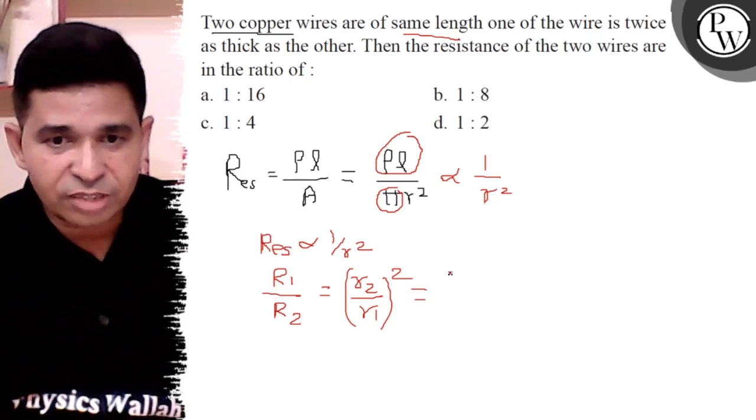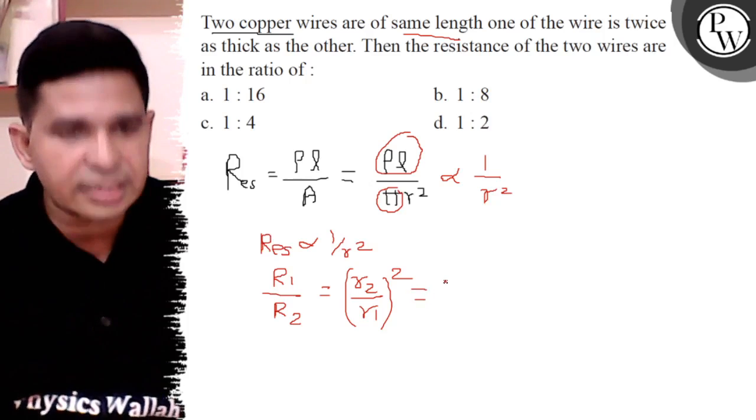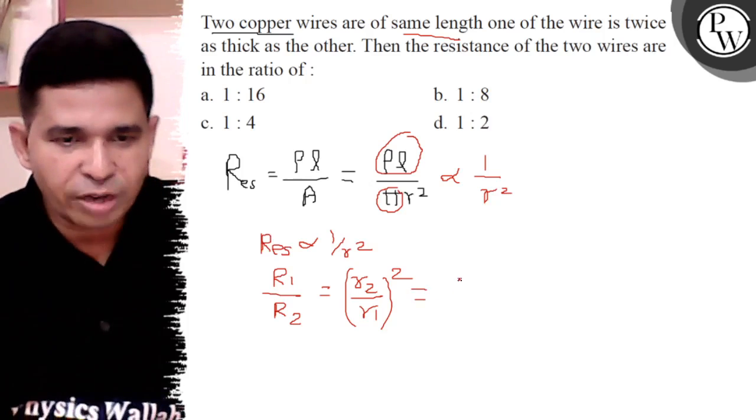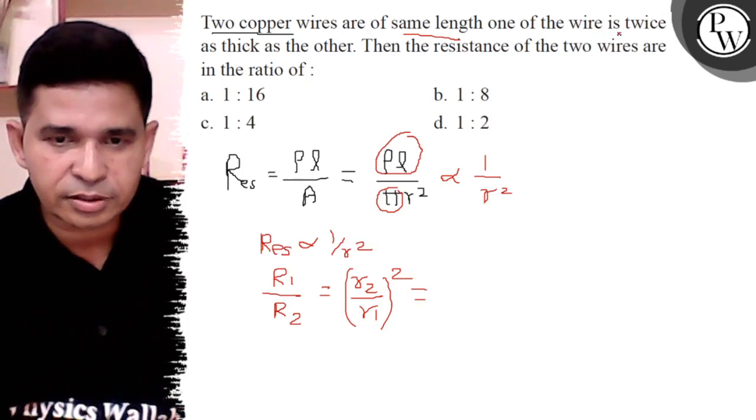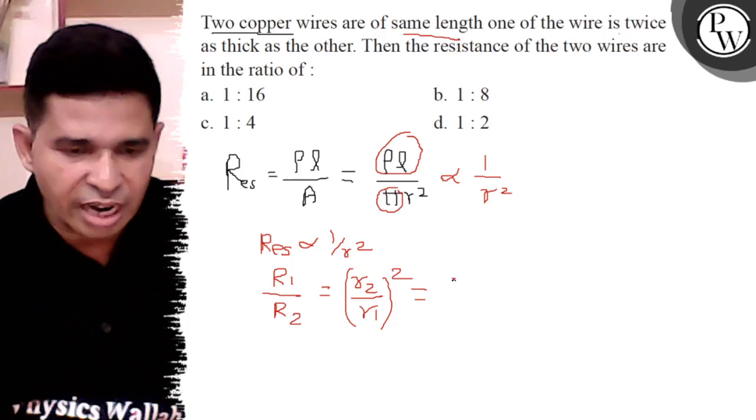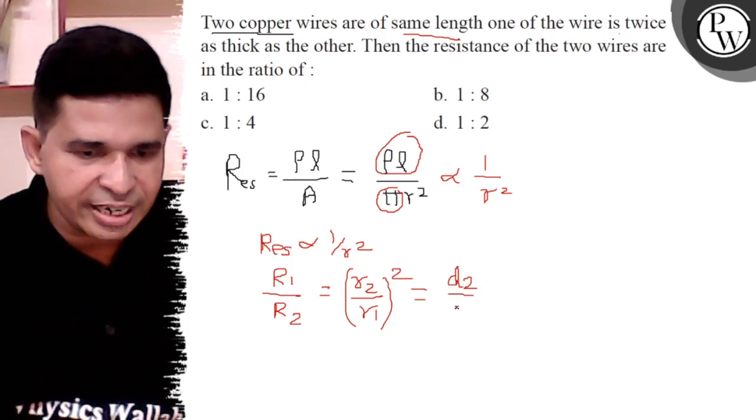So, what is the thickness? Thickness is the diameter, so definitely radius is directly proportional to diameter. D is the diameter.